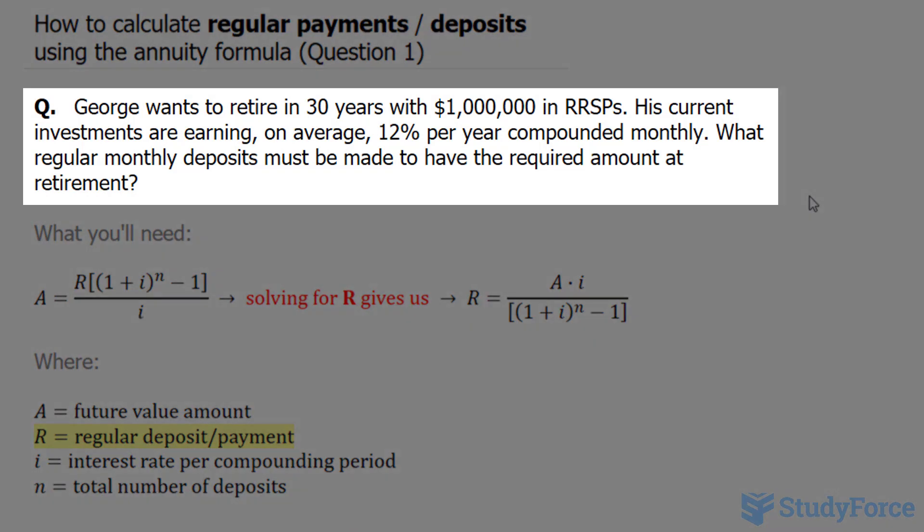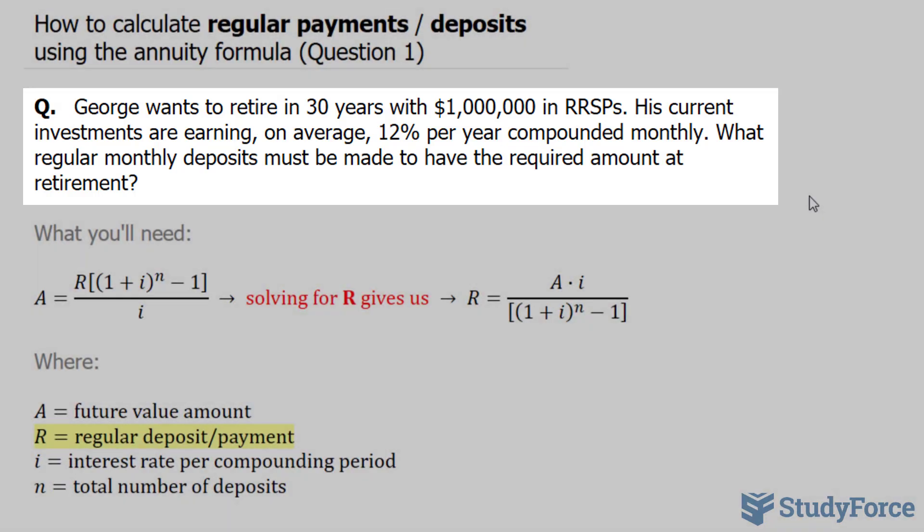The question asks, George wants to retire in 30 years with 1 million in RRSPs. His current investments are earning on average 12% per year compounded monthly. What regular monthly deposits must be made to have the required amount at retirement?